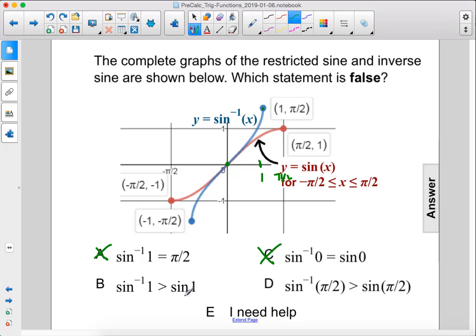Arc sine of 1 is greater than sine of 1. Alright, so remember 1 is right here, arc sine of 1 is up here at pi over 2, and sine is right down here, below 1. So this is true. The value of this point on the y-axis is higher up than this point, so that's true.